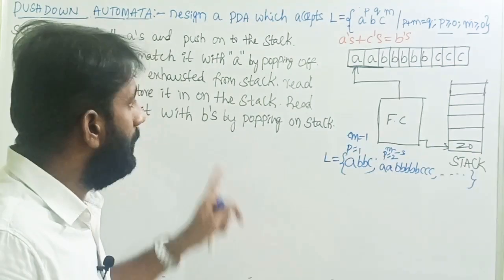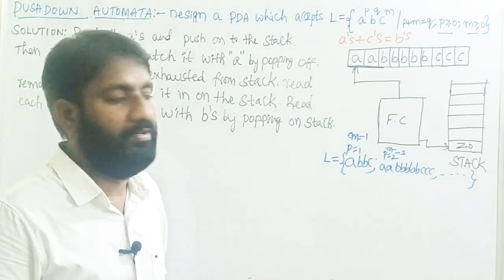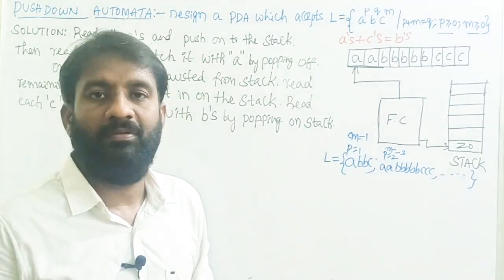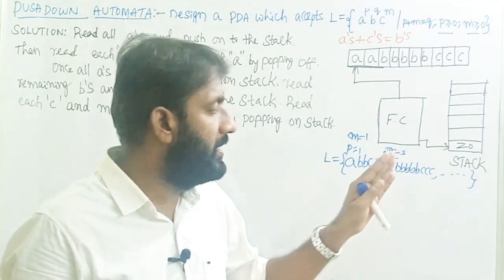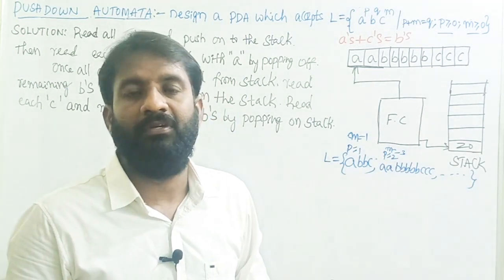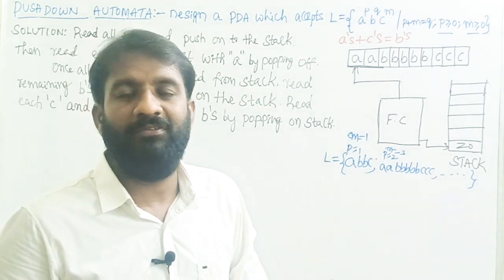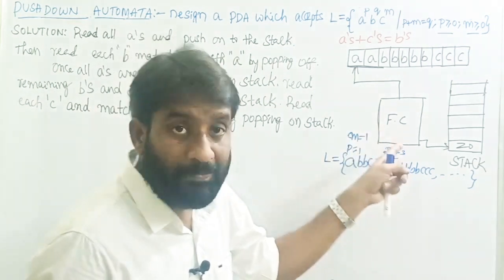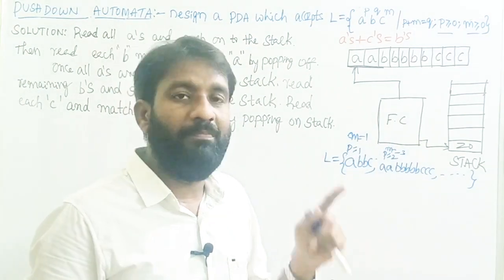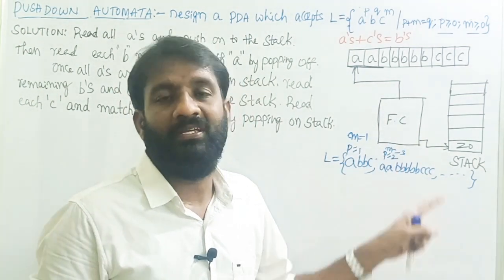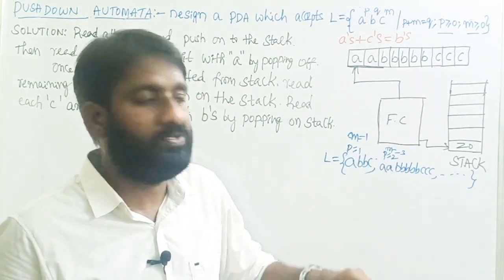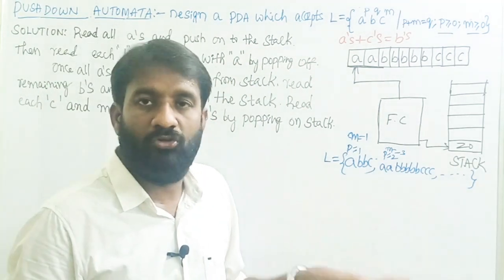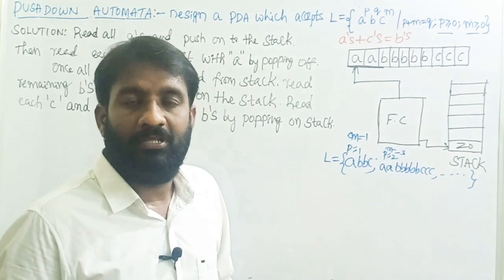The logic is: read all A's and push them onto the stack. Then read B's and match them with A's on the stack using the pop operation. After the pop operation, if any B's remain in the input string, read those B's onto the stack. Then match the remaining B's with C's using the pop operation, so the stack is empty and we can move to the final state.